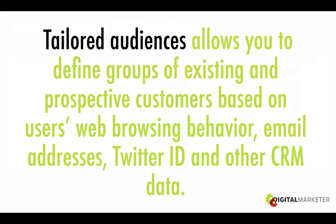Now onto tailored audiences, which are very similar to custom audiences on Facebook. They allow you to define groups of existing and prospective customers based on web behavior. You can put Twitter tags and code on your website to start populating those audiences and building remarketing lists. If we're sending traffic from Twitter to cold audiences to our blog post, we're able to pixel them on Twitter — because that's the platform they came from — as well as on Facebook and Google. You can upload email addresses, Twitter IDs, and other CRM data.